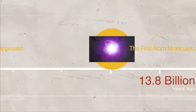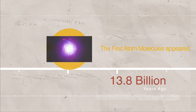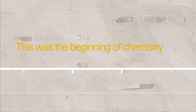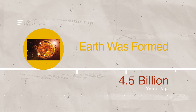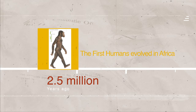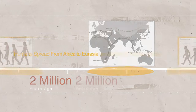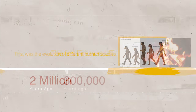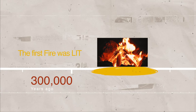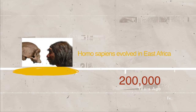13.8 billion years ago, the first atoms and molecules appeared — the beginning of chemistry. 4.5 billion years ago, Earth was formed. 2.5 million years ago, the first humans evolved in Africa. 2 million years ago, humans spread from Africa to Eurasia, marking the evolution of different human species. 300,000 years ago, the first fire was lit. 200,000 years ago, Homo sapiens evolved in East Africa. Up until this point, humans existed but had no influence on history, no impact on the environment, and were no more significant than jellyfish or fireflies. This period was considered prehistoric.